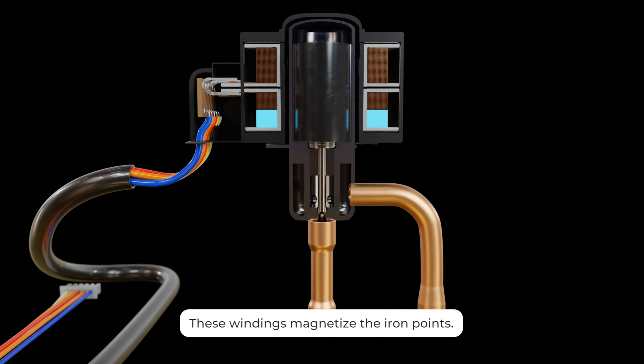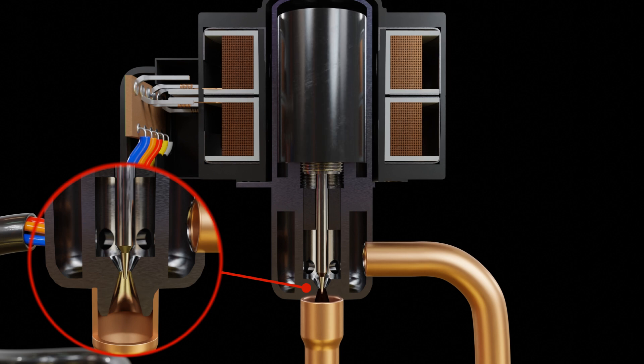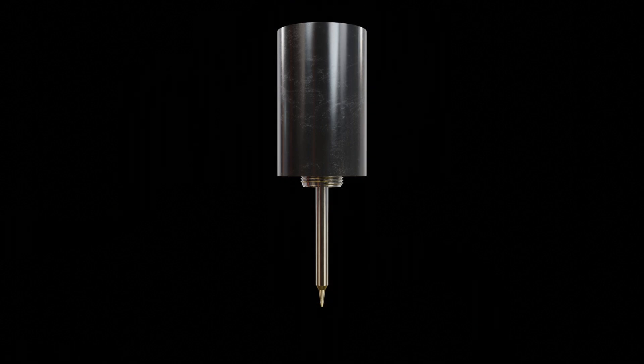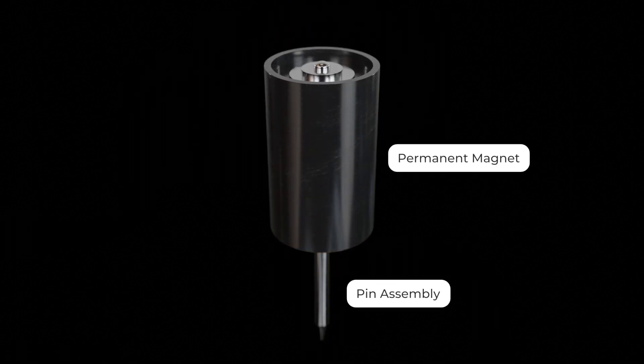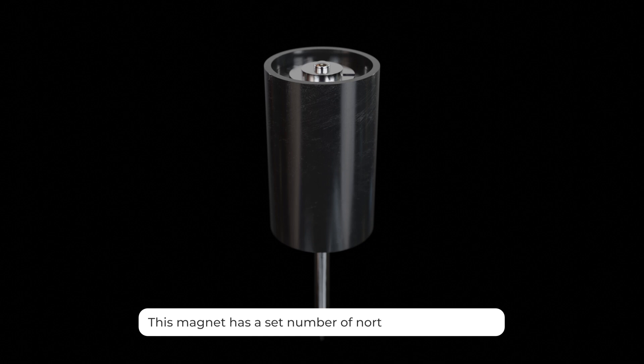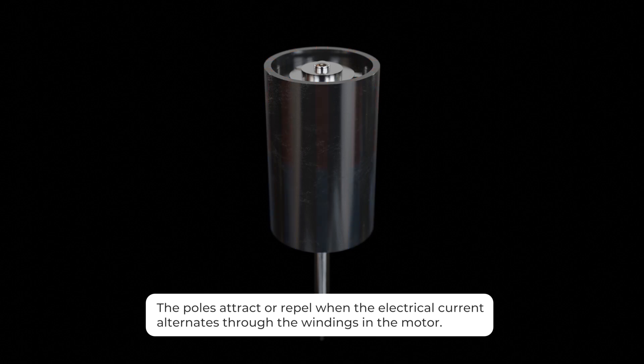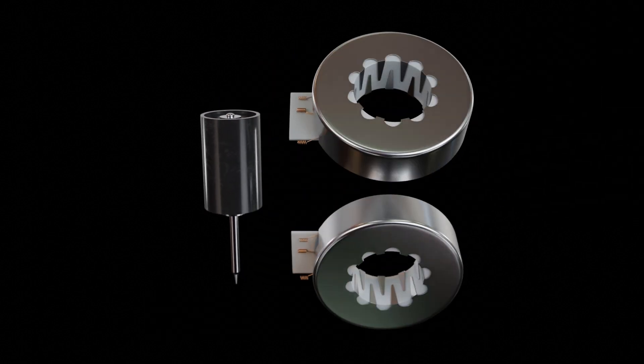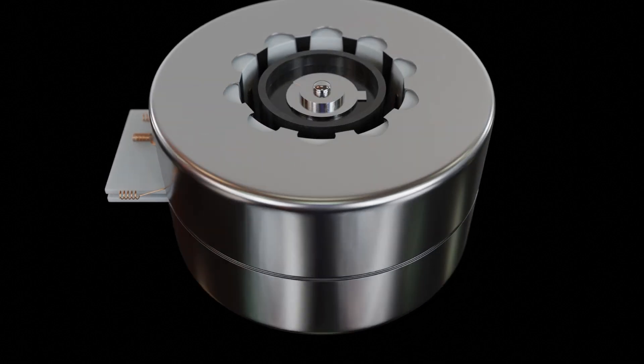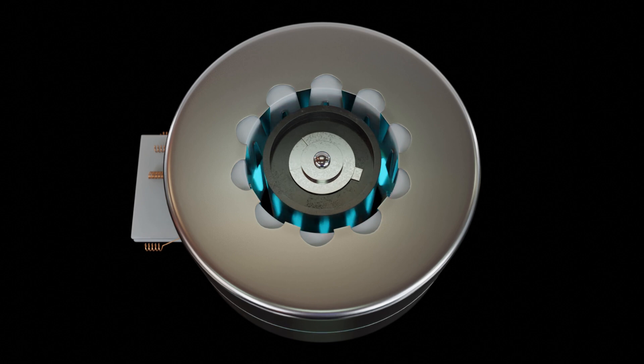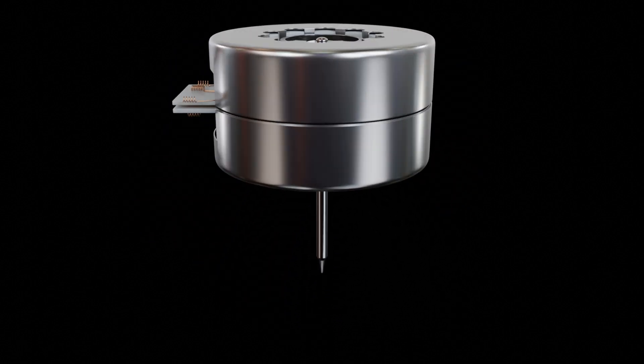These windings take in electrical signals and magnetize the iron points which help rotate a magnet connected to the inner rotor which moves up and down with clockwise and counterclockwise rotation. These EEVs have a permanent magnet inside an aluminum shell connected to the pin assembly. This magnet has a set number of north and south poles that attract or repel when the electrical current alternates through the windings in the motor.